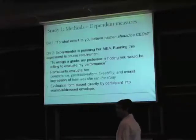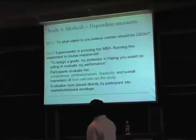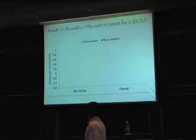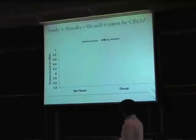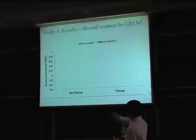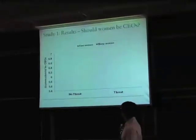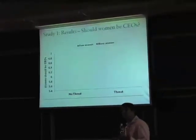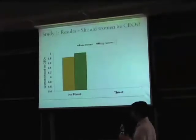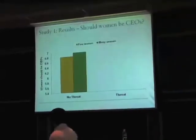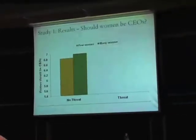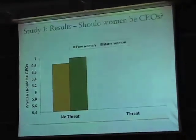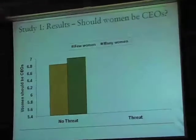They seal their evaluations in an envelope and are told to mail it directly to the professor, so this forms the basis of her grade. When the system justification motive is weakened — the no-threat condition — whether participants learn about few women or many women in the business world, everyone thinks women should be CEOs.